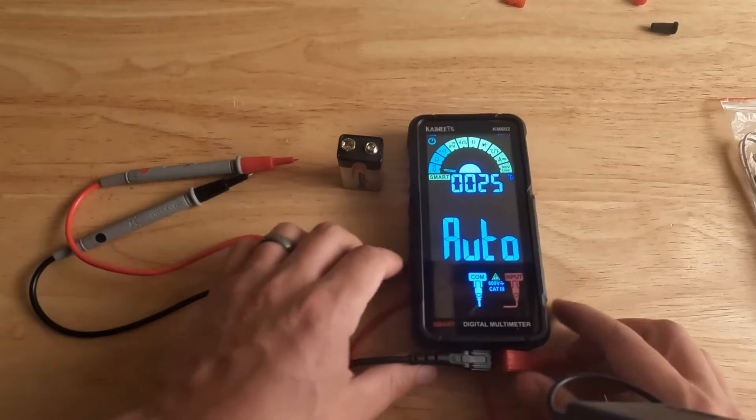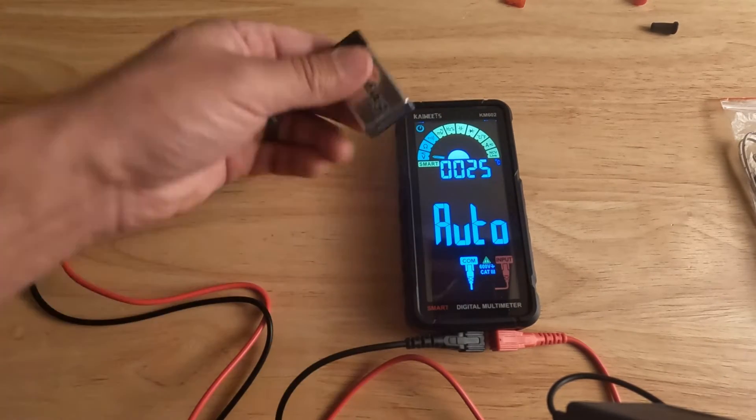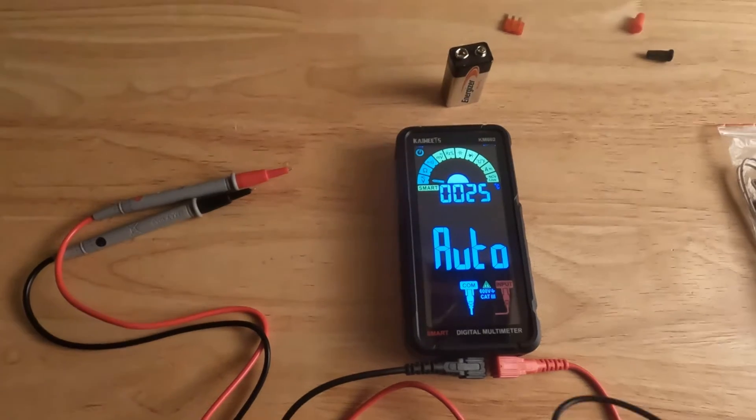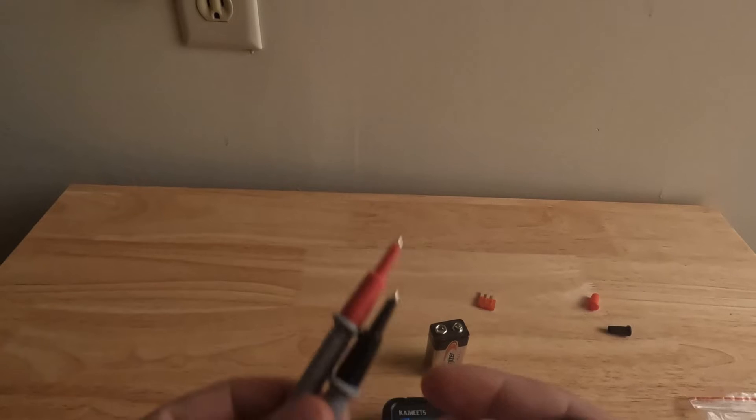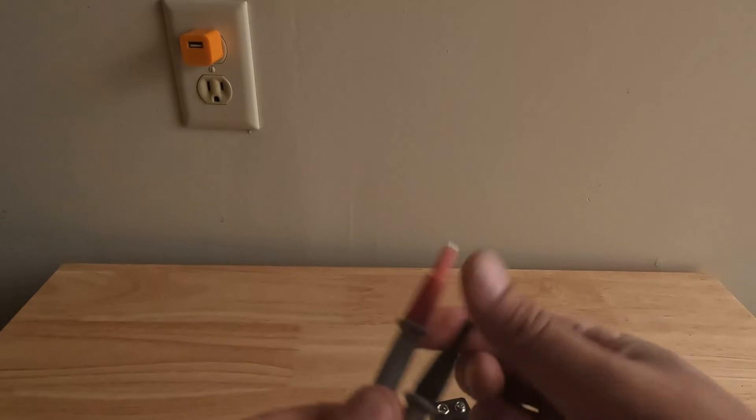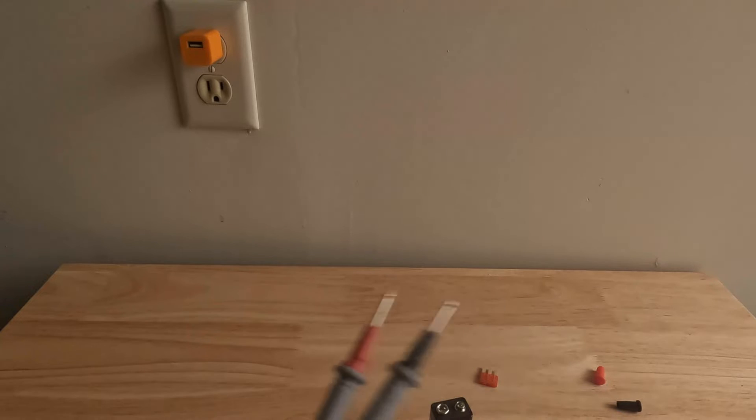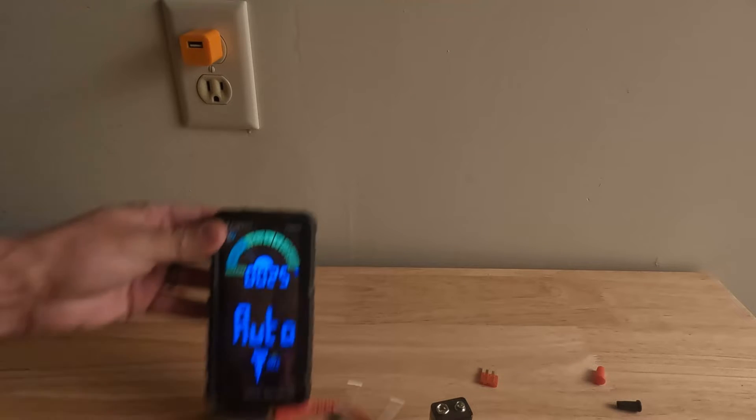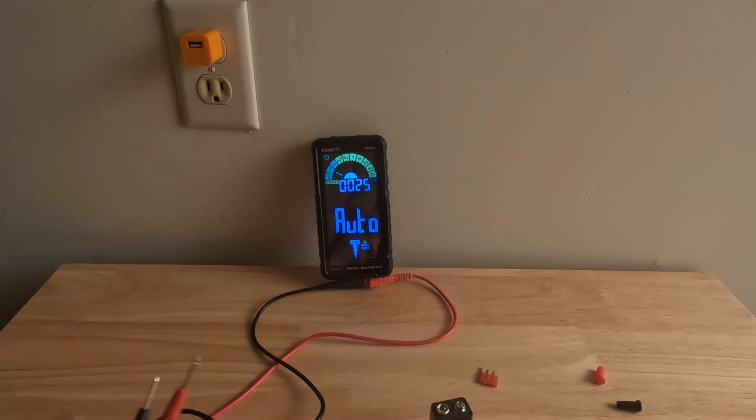So that automatically knew that this battery was direct current. Now we're going to go up to our outlet. We're going to take these off to expose more of the probe and then we're going to measure this outlet. We should be getting 120 volts approximately.